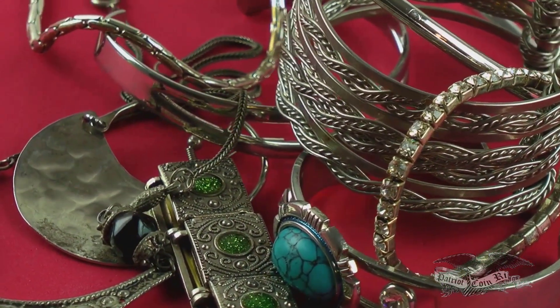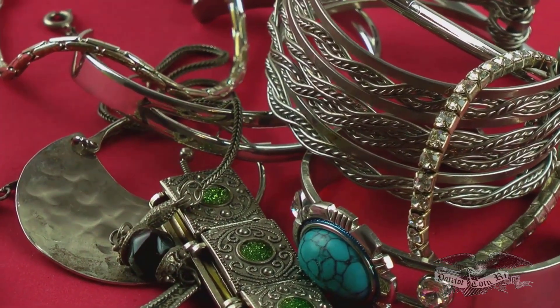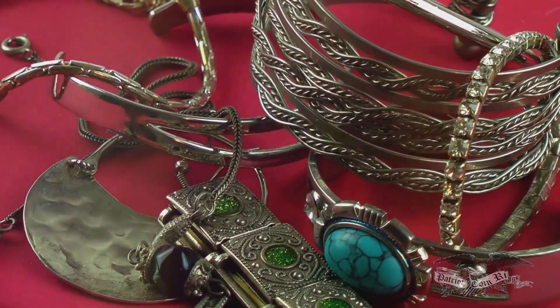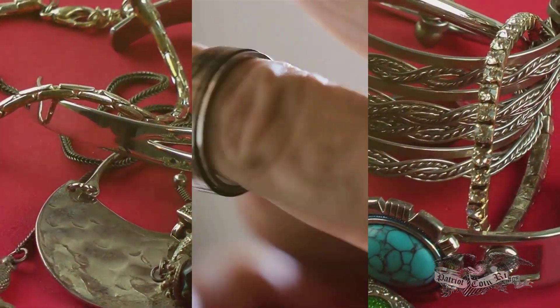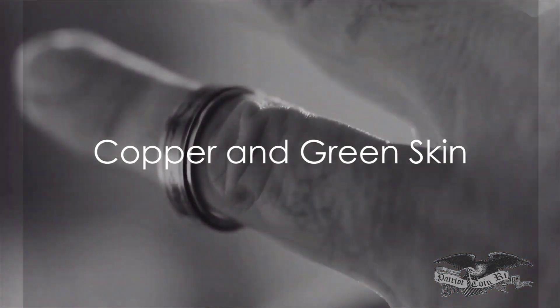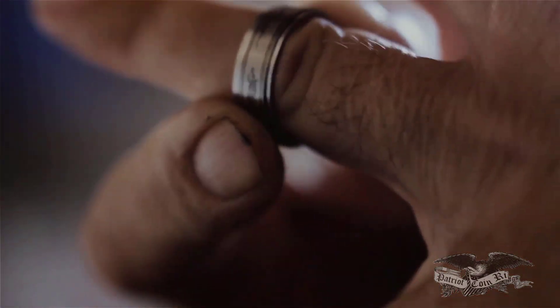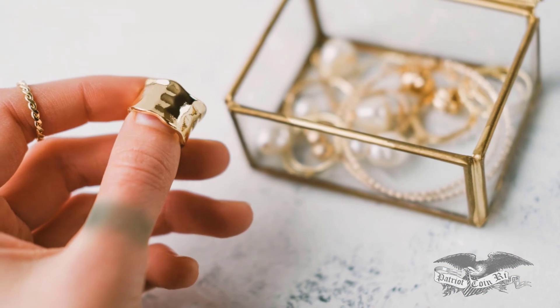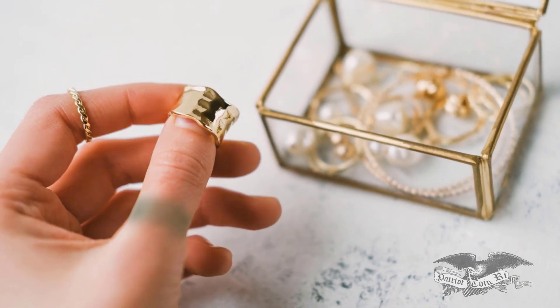These metals are prone to tarnishing, a process that occurs when the metal reacts with certain elements in the environment like oxygen or sulfur. Copper, for instance, reacts with oxygen and the salt in our sweat to create copper salts. These salts have a green color, which can rub off onto your skin.